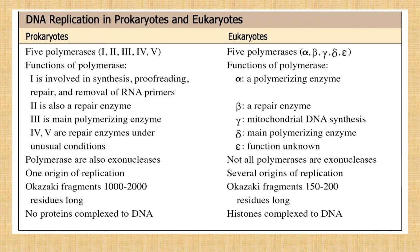Polymerases are also exonucleases in prokaryotes but not all polymerases are exonucleases in eukaryotes. Prokaryotes have a single origin of replication whereas eukaryotes have several origins of replication along the chromosome. Okazaki fragments in prokaryotes are about 1000 to 2000 nucleotides long, whereas eukaryotic Okazaki fragments are much smaller — around 150 to 200 residues. Finally, there are no protein complexes to DNA in prokaryotes, while in eukaryotes histones are complexed to DNA and need to be unwound once DNA replication is initiated.